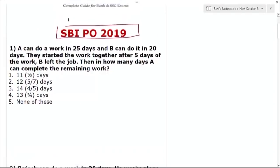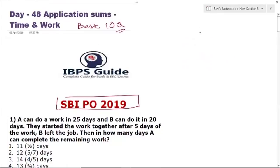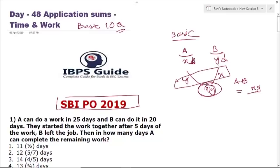Before going to the first question I will give you a very brief introduction about time and work and the method we are going to follow. Suppose A does a work in X days and B does a work in Y days. The total work is the product of these two (LCM). So the efficiency of A will be Y and the efficiency of B will be X.